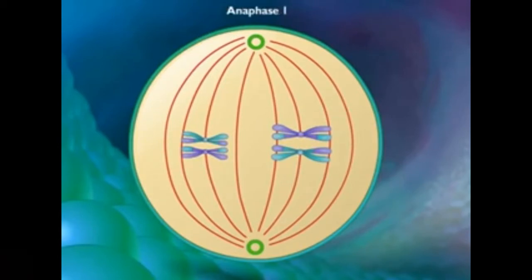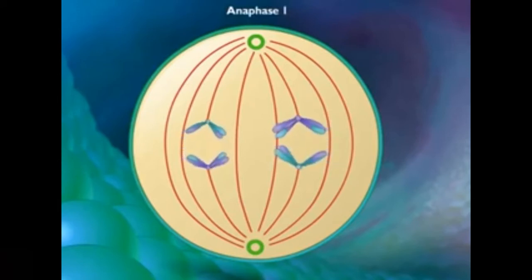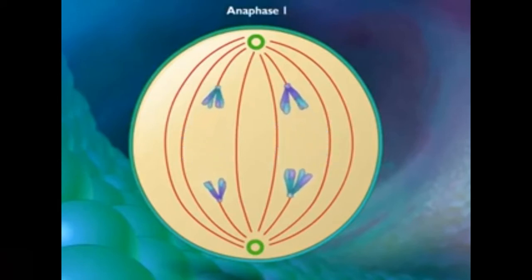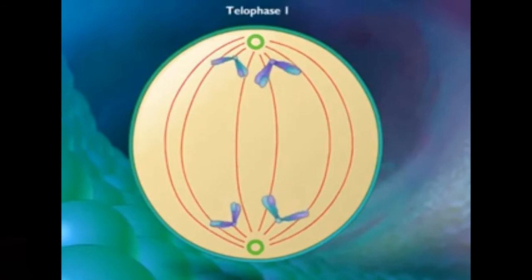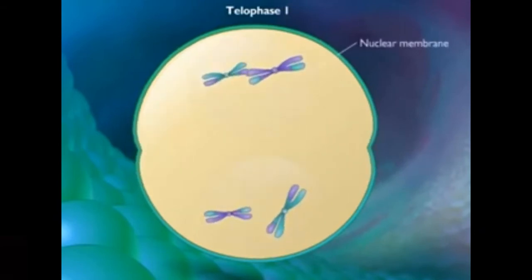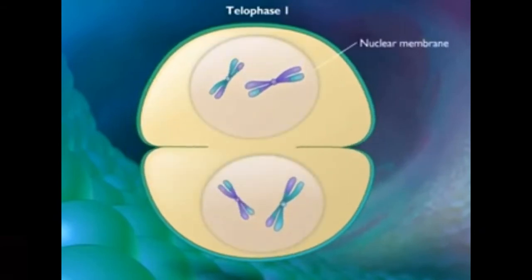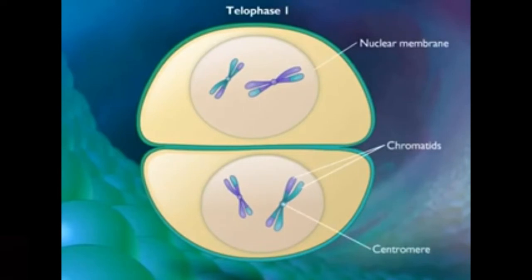In anaphase 1, the spindle fibers begin to pull the chromosomes toward the opposite poles, taking both sister chromatids with them. Each pole will have a complete haploid set. In telophase 1, the chromosomes reach their respective poles, and cytokinesis follows and two daughter cells are formed. Each cell now has only half of the chromosome number because only one chromosome from each pair goes to the daughter cell.